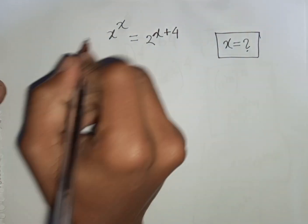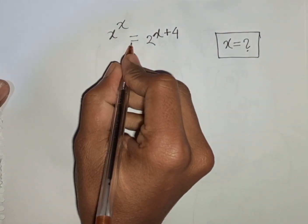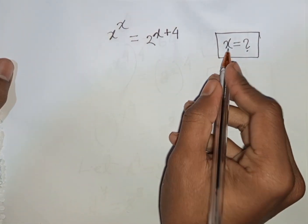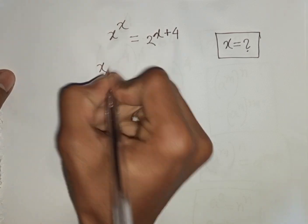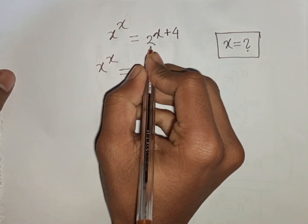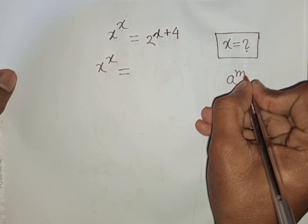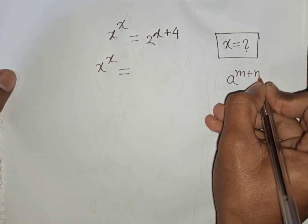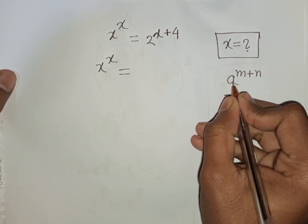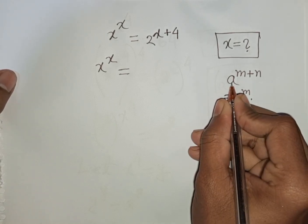How to solve x power x is equal to 2 power of x plus 4. Find the value of x. So we have x power x is equal to — here I can apply this exponential rule that a power of m plus n is equal to a power m times a power n.